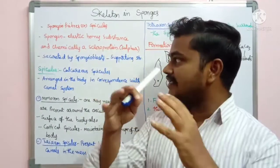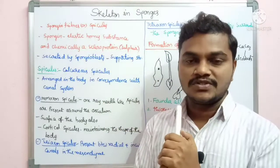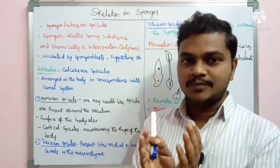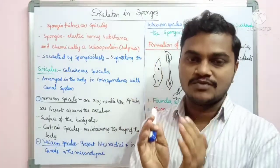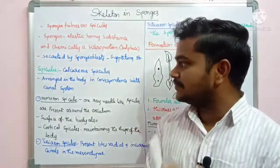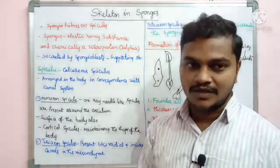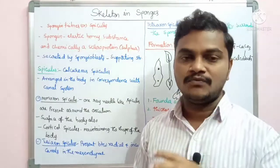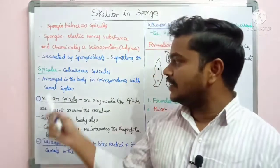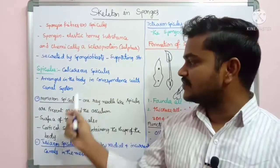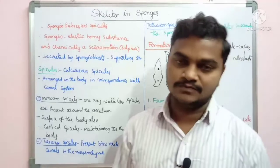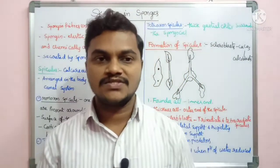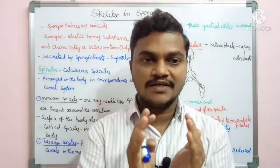The second component is calcareous spicules, because they are made up of calcium carbonate. They are arranged in the body in correspondence with the canal system, providing support to the canal system.